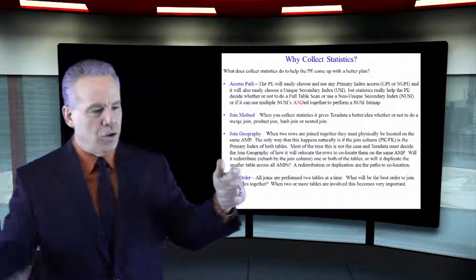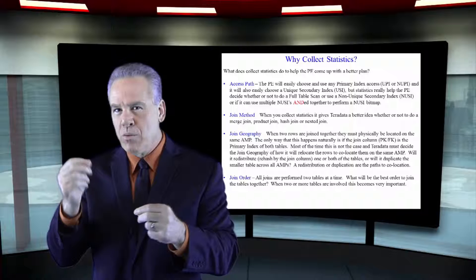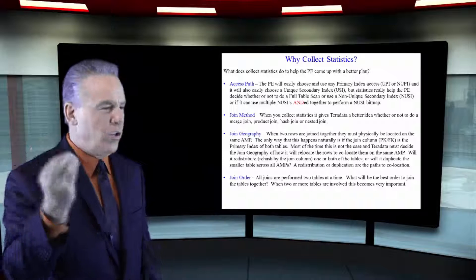Join geography. Two rows joined must be on the same Amp. Should I redistribute one of those tables? Should I duplicate the smaller table? And that's the join geography that it likes to utilize.